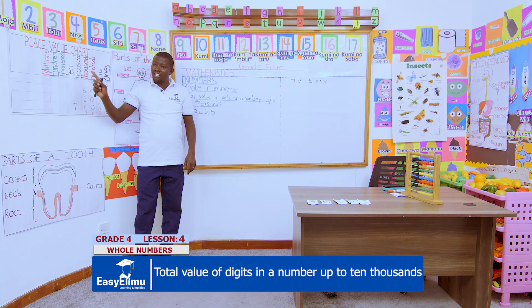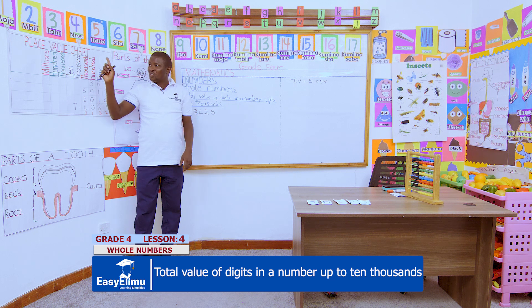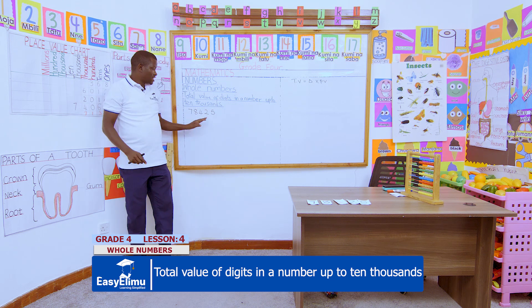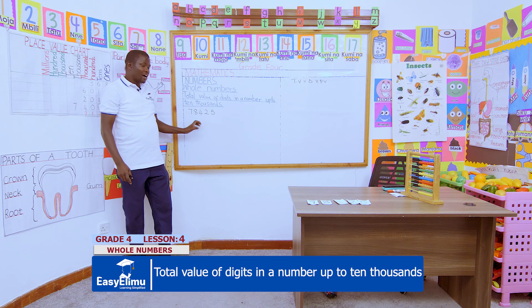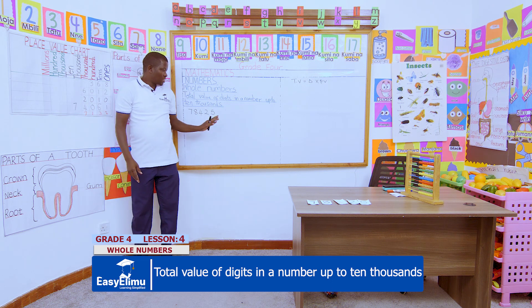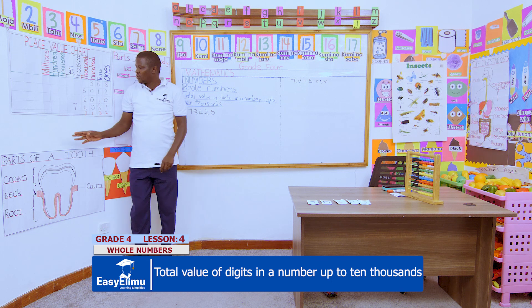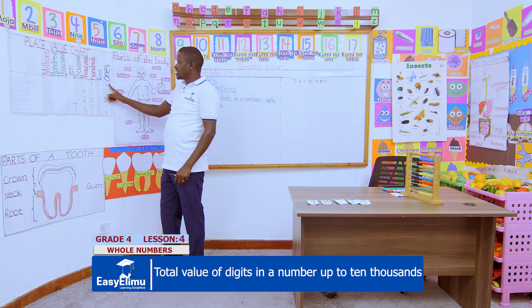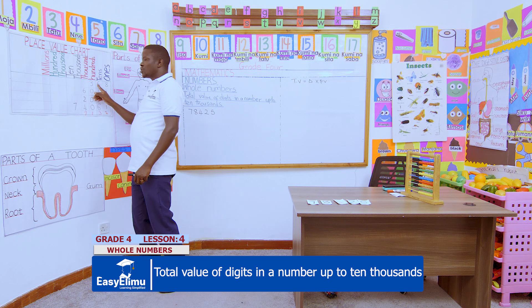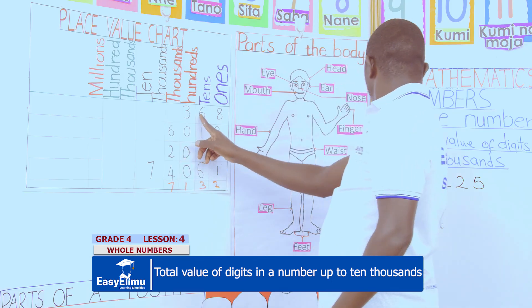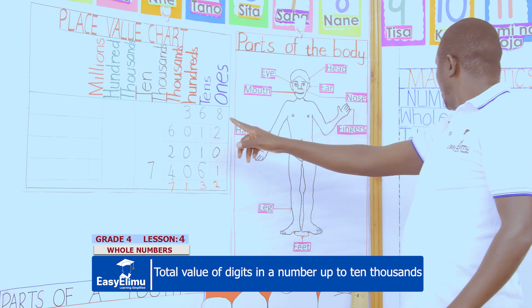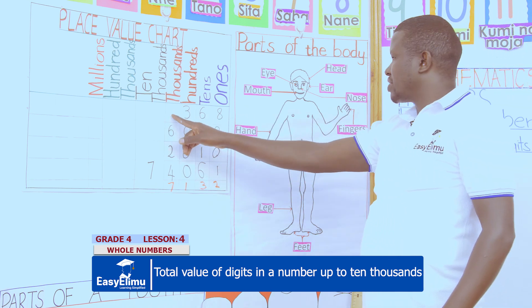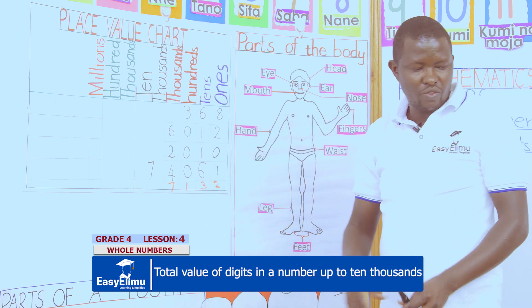For you to arrive at the total value of each digit, remember in our previous lesson we said you use the place value. Let us analyze this number using the place value chart. We have five ones, two tens, four hundreds, eight thousands, and seven ten-thousands.